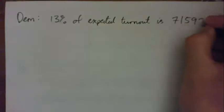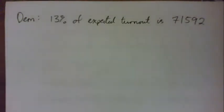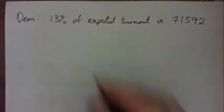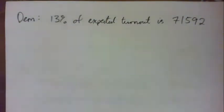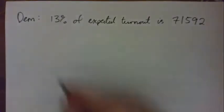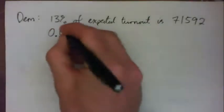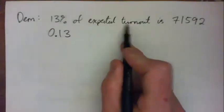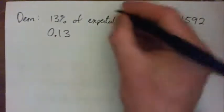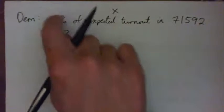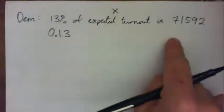It's 71,592. Did we all agree with that sentence? Okay, so let's turn that sentence into math. 13% as a decimal is what? Right, 0.13. 'Of' means multiply. Expected turnout is the number we're looking for; we'll call that X. So we have 13% of X is this.